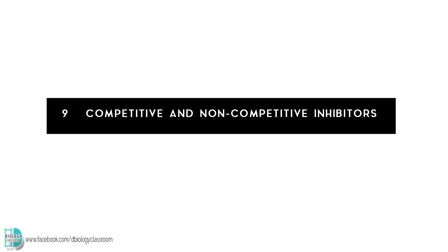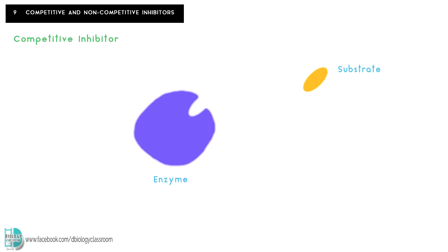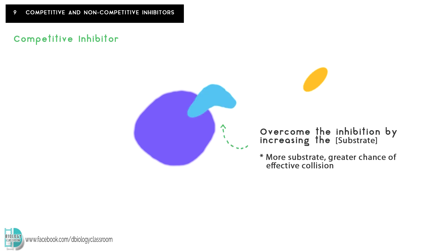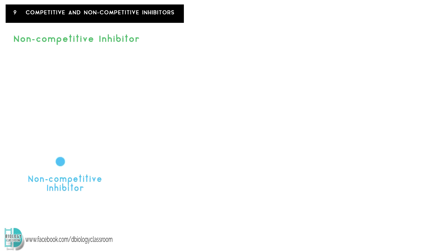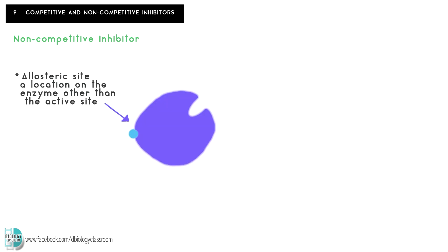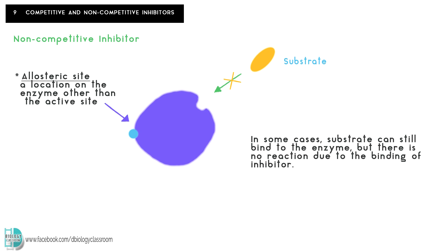Number 9, inhibitors can be competitive or non-competitive. A competitive inhibitor has a shape that is complementary to the active site, and this inhibition can be overcome by increasing substrate concentration. A non-competitive inhibitor combines to the enzyme at its allosteric site, altering the shape of the enzyme and causing its active site to no longer be complementary to its substrate. In some cases, the substrate can still bind to the enzyme, but there is no reaction due to the binding of the inhibitor.